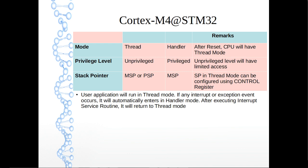The user application will run in thread mode. If any interrupt or exception event occurs, it will automatically switch to handler mode. Different privilege levels help define user application access limits. In unprivileged mode, the user has limited access to registers, memory, and other resources. Certain system-critical registers cannot be accessed by user applications running in unprivileged mode. Privileged mode will have all kinds of access.